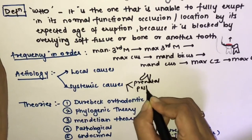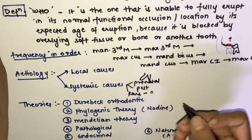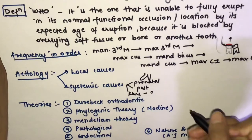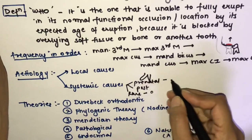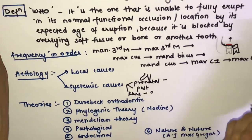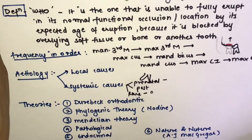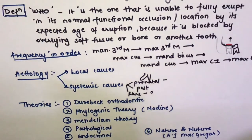Systemic causes can be prenatal, postnatal, or rare conditions. Rare conditions include osteopetrosis, cleft palate, or progeria. Prenatal causes include hereditary factors. Postnatal causes include rickets, anemia, congenital syphilis, tuberculosis, endocrine dysfunctions, and malnutrition.